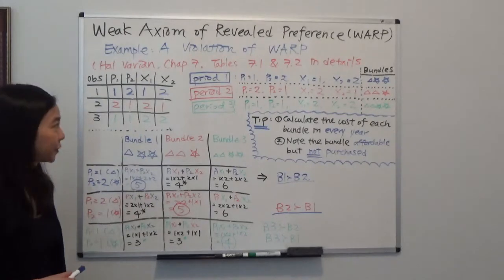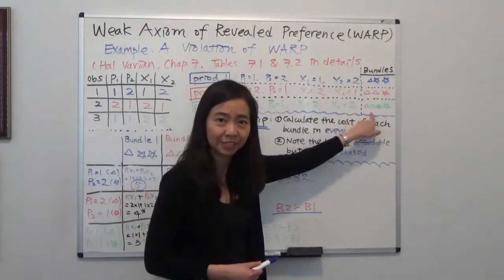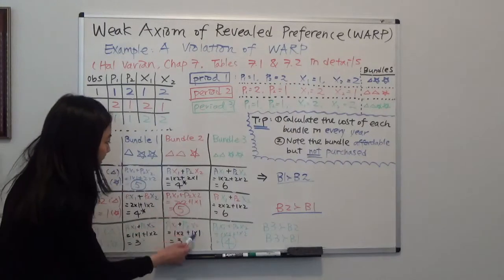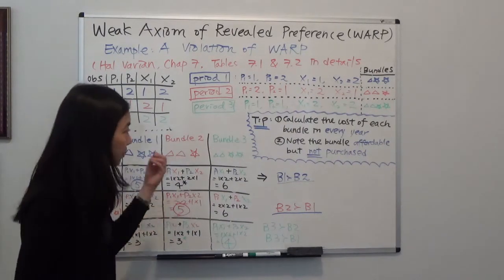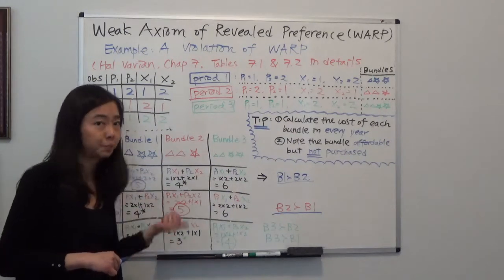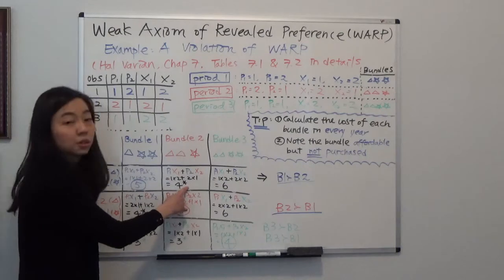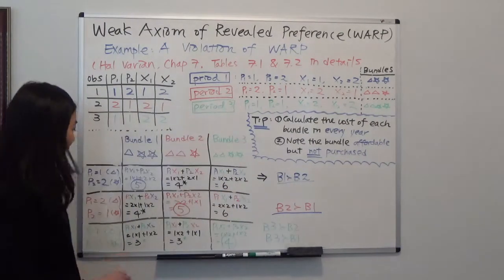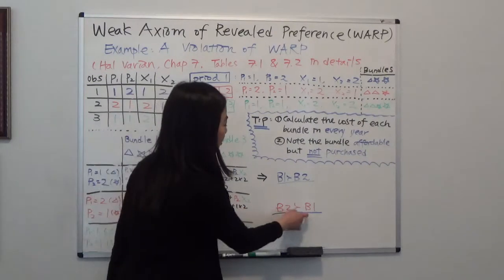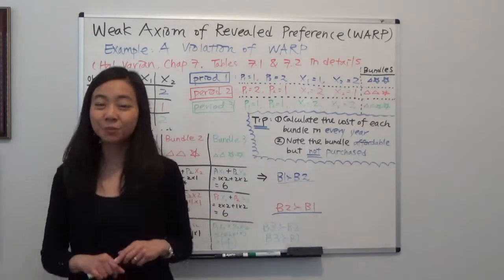I hope this helps. To recap: first, list the three observations and have a visual idea of what bundles you have in each year. Second, calculate the cost of each bundle in every single year — you'll have a 3-by-3 matrix. Third, identify the bundles that were affordable but not purchased. In year 1, bundle 2 was affordable but not bought, so you prefer bundle 1 to bundle 2. In year 2, bundle 1 was affordable but not bought, so you prefer bundle 2 to bundle 1. That contradiction is where the WARP violation comes from.